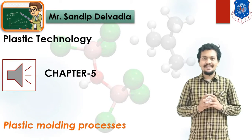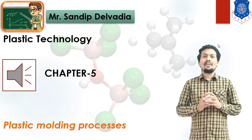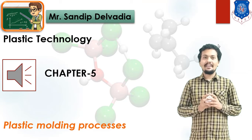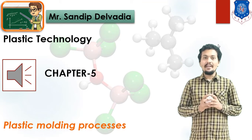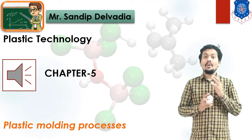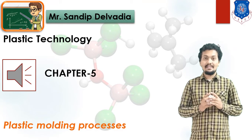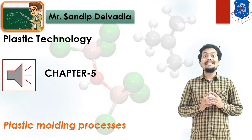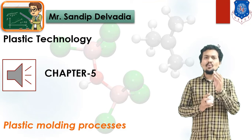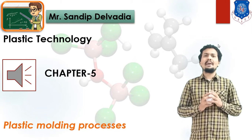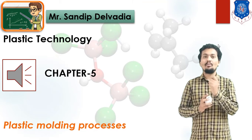Hello Students! In Manufacturing Technology, we have started the Plastic Technology chapter. We have discussed the Classification of Plastic. In the Classification of Plastic, there are mainly two types of Plastic Materials: Thermosetting and Thermoplastic.